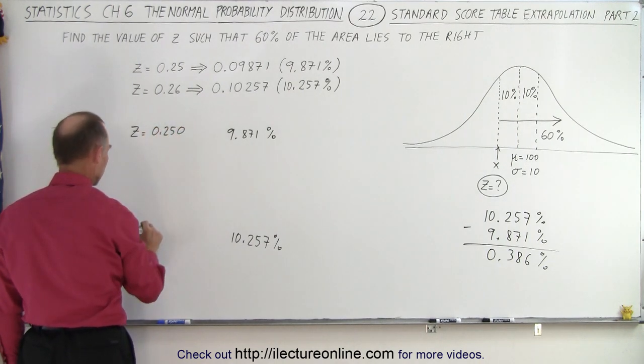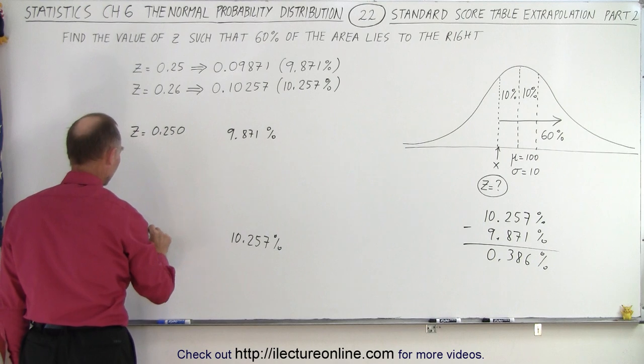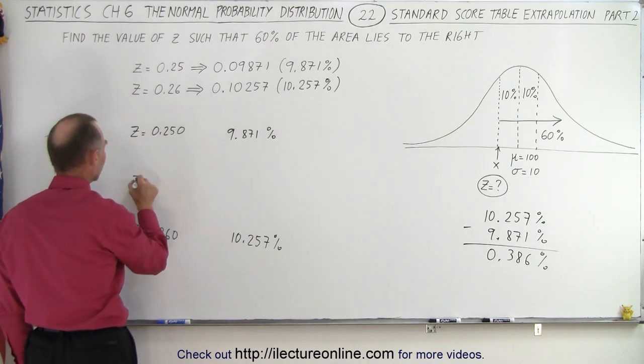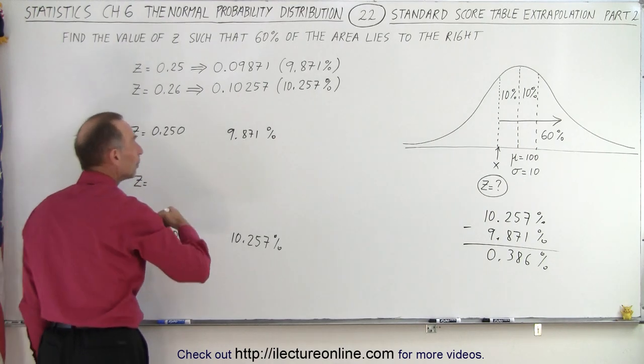And here we have z equals 0.260, and again I'll add the 0. So here we find we're looking for a z somewhere in between.